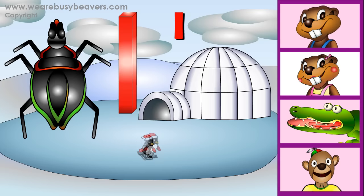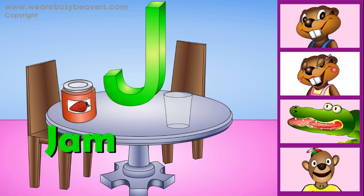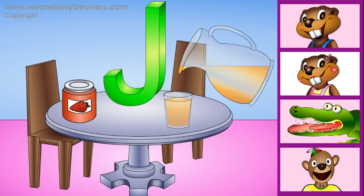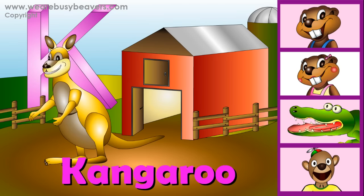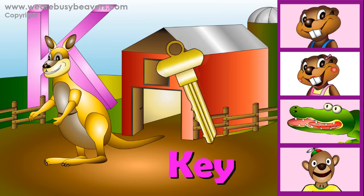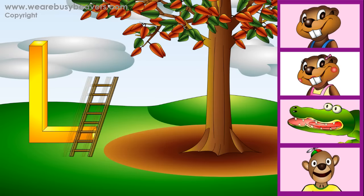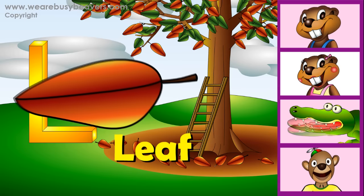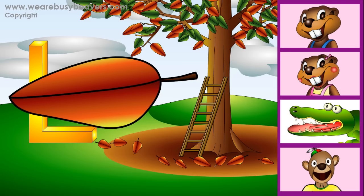It's an i-i-igloo. It's a j-j-... It's a k-k-kangaroo. It's a c-c-key. It's a l-l-letter. It's a l-l-leaf. It's you.